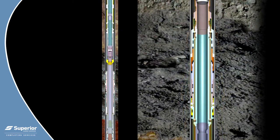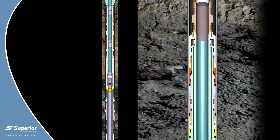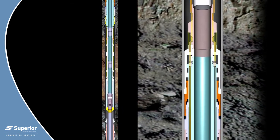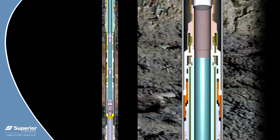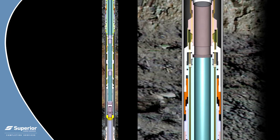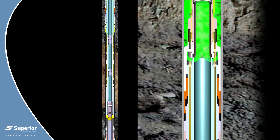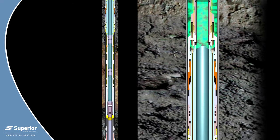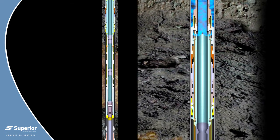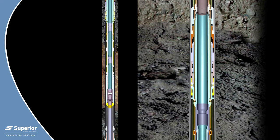After the well has been killed, the system is released by achieving a predetermined overpull at the comp pro packer. At the desired overpull, the release pins shear, parting the mandrel and opening communication to the annulus from the tubing. Kill fluid may be circulated in the annulus at this time. Once the well is stable, continued upward movement will release the packer and the entire system can be recovered.